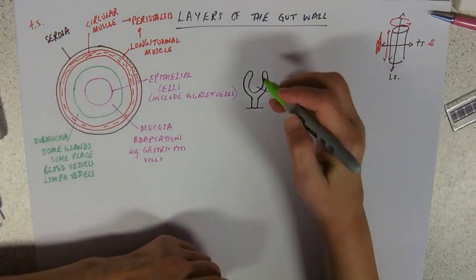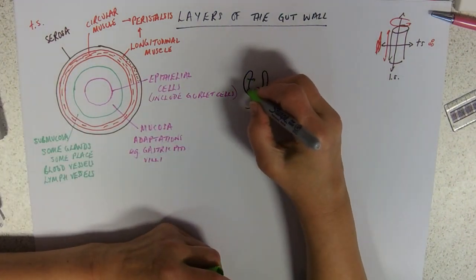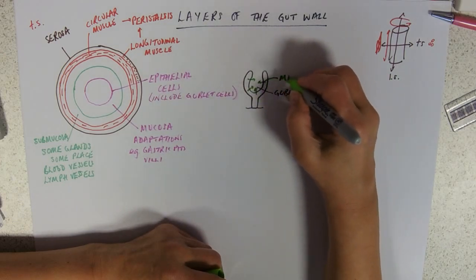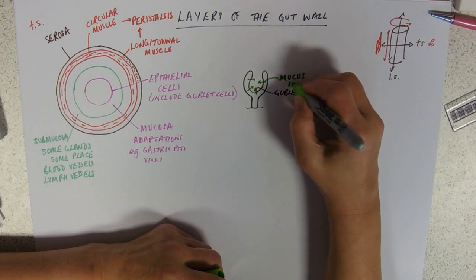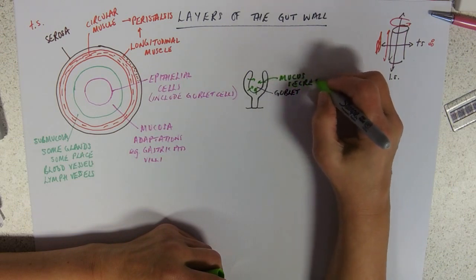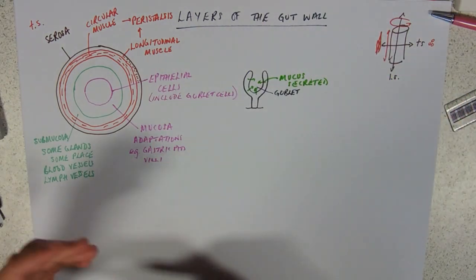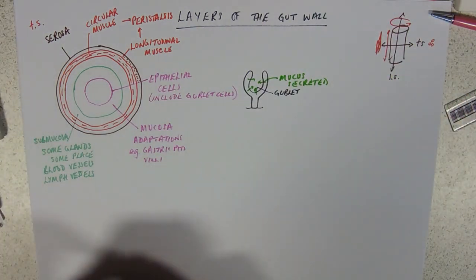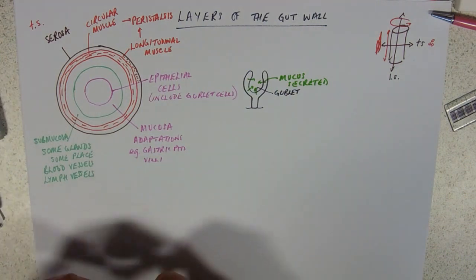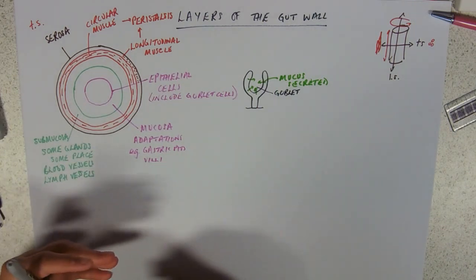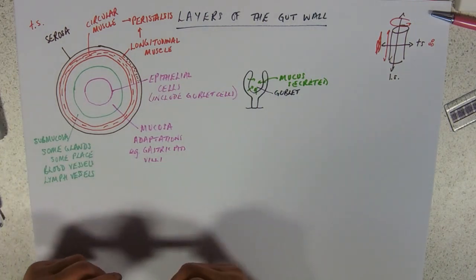What do goblet cells do? Well, they secrete mucus into the goblet. To refer you back to the synoptic stuff, they're making the protein aspect of mucus on their endoplasmic reticulum. It's getting modified into mucus, so it's having carbohydrate added to it so it's a glycoprotein, in the Golgi body.